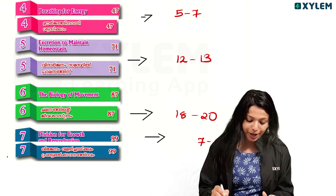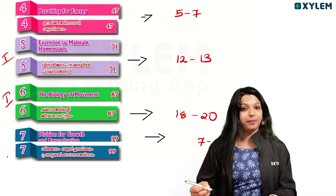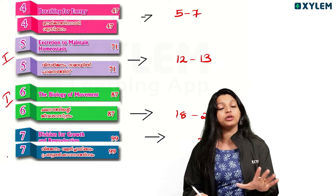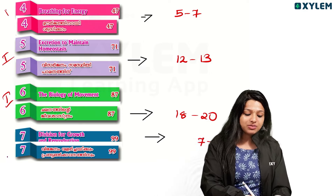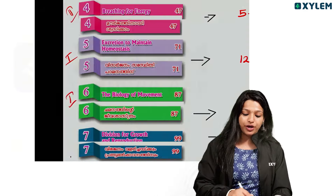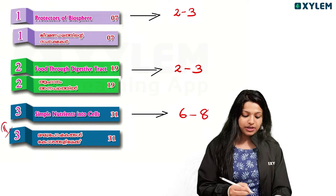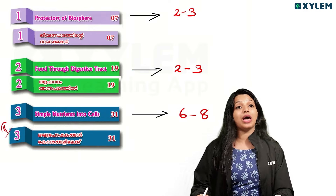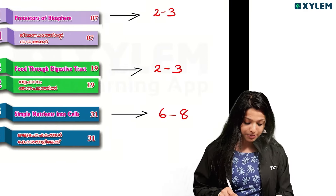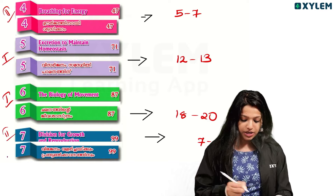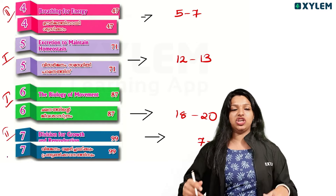1st priority: chapters 5 and 6. 2nd priority: chapters 3 and 4. The last chapter covers our division — the 4th chapter.